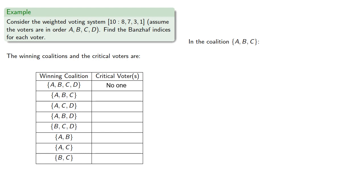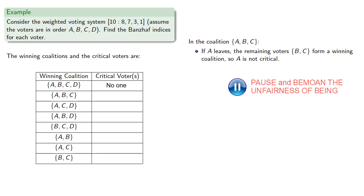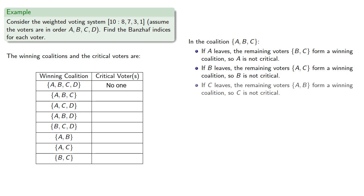How about the coalition A, B, and C? If A leaves, the remaining voters B and C still form a winning coalition, so A is not critical. And likewise, if B or C leave, we still form a winning coalition, so again, no member is critical.